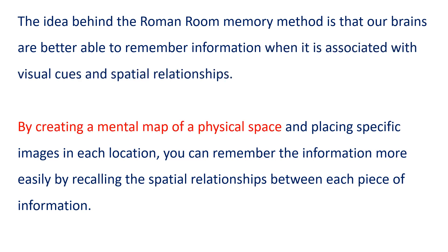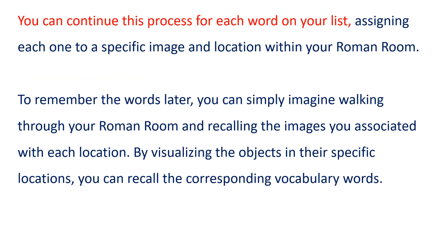By creating a mental map of a physical space and placing specific images in each location, you can remember the information more easily by recalling the spatial relationships between each piece of information. You can continue this process for each word on your list, assigning each one to a specific image and location within your Roman room.